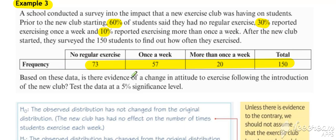And so we want to test at the 5% significance level whether there is a change in attitude to exercise following the introduction of the new club. So we want to see whether there's significant difference between the observed and what we would have expected if there was no change.